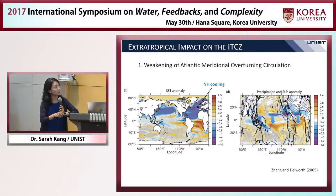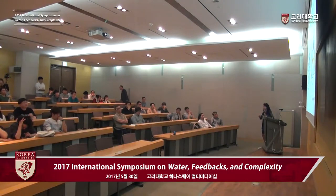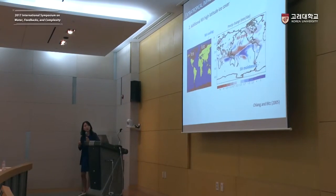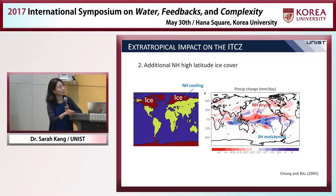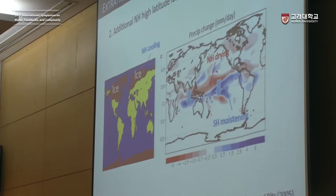In another paper, the authors prescribed additional ice in the Northern Extratropics, which again made the Northern Hemisphere cooler. As a result, there was a southward shift of the ITCZ. Amazingly, the local precipitation response was actually smaller, and the largest precipitation response occurred in the tropics. Another example involves sulfate emissions in the Northern Extratropics. Sulfate reflects solar radiation, making the Northern Hemisphere cooler, and that acts to shift the tropical rain band southward.